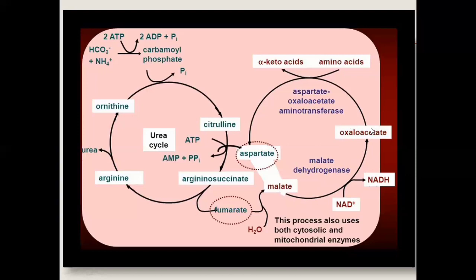Oxaloacetate can be reused in the Krebs cycle, or it can also enter a transamination reaction. In the transamination reaction, oxaloacetate receives the amino group from amino acids with the help of the enzyme aminotransferase, and it is converted into aspartate. This aspartate is an amino acid that will be again used in the urea cycle — aspartate re-invests in the urea cycle.